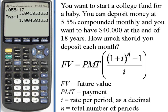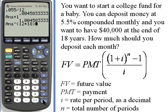I'll take the 1 plus i and raise it to the n power using the raise-to button, which is just below the clear button. The power is the total number of periods: there are 12 periods in a year and 18 years, so I'll use parentheses and multiply 12 times 18. Now the answer is raised to the n power. I then take that result — (1 + i) to the n — and subtract 1 from it.